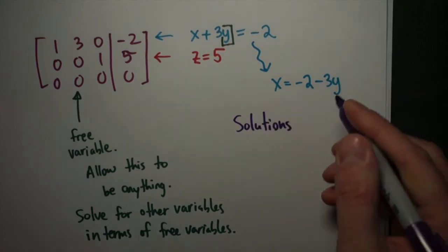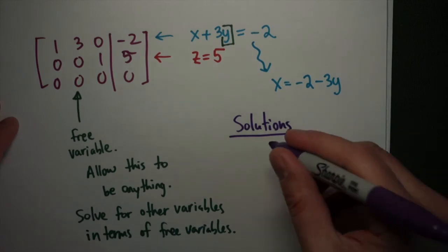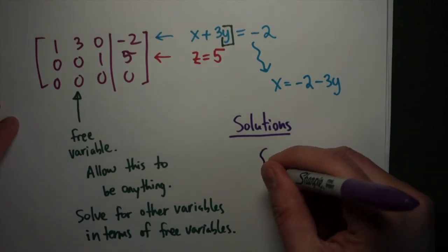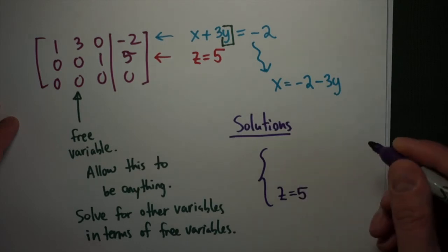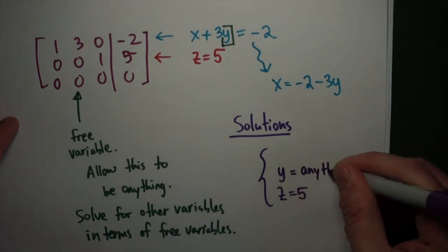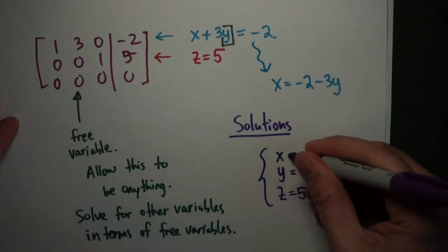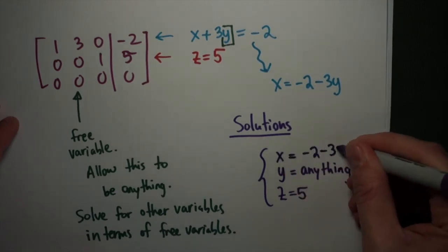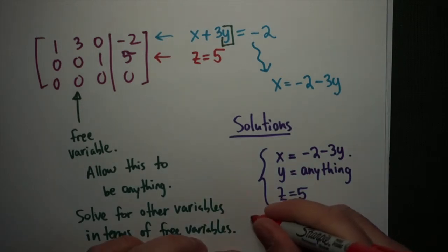Then I can write down my full set of solutions in terms of the free variable. My solutions are of the form: z equals 5, y is free so y can be anything, and x is negative 2 minus 3y. These are all of the solutions. If I want a particular solution, all I have to do is make a choice for y.